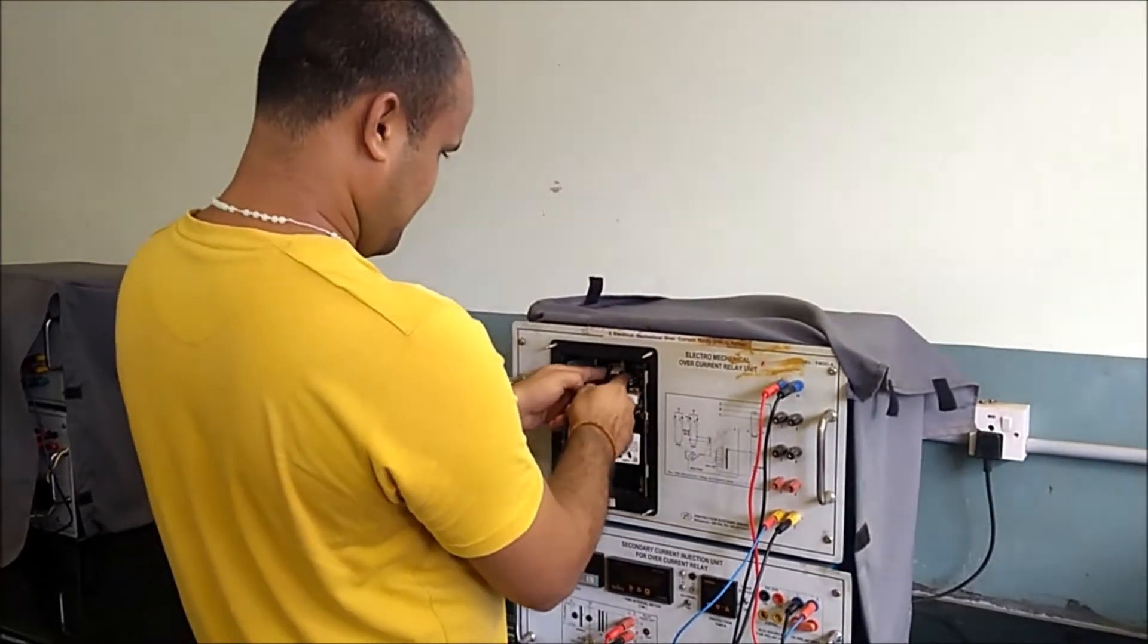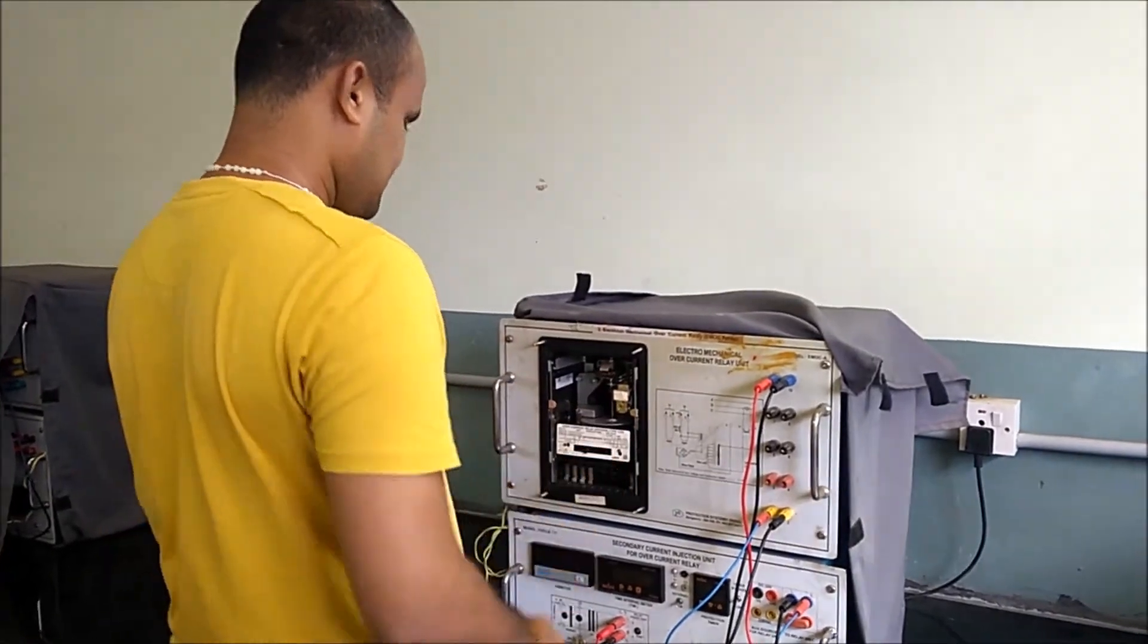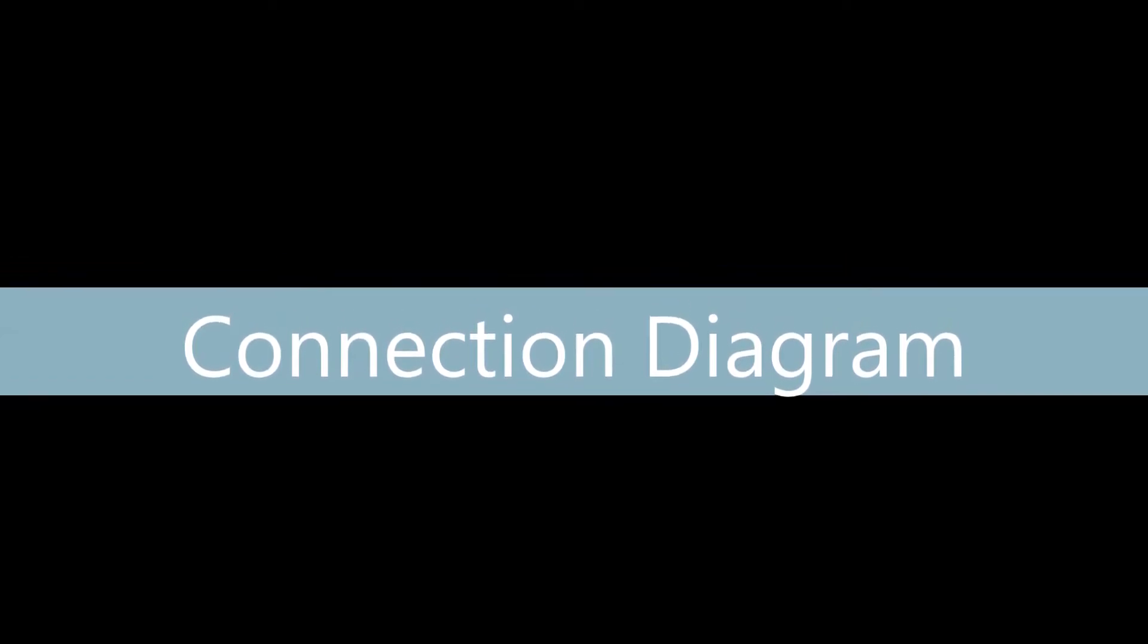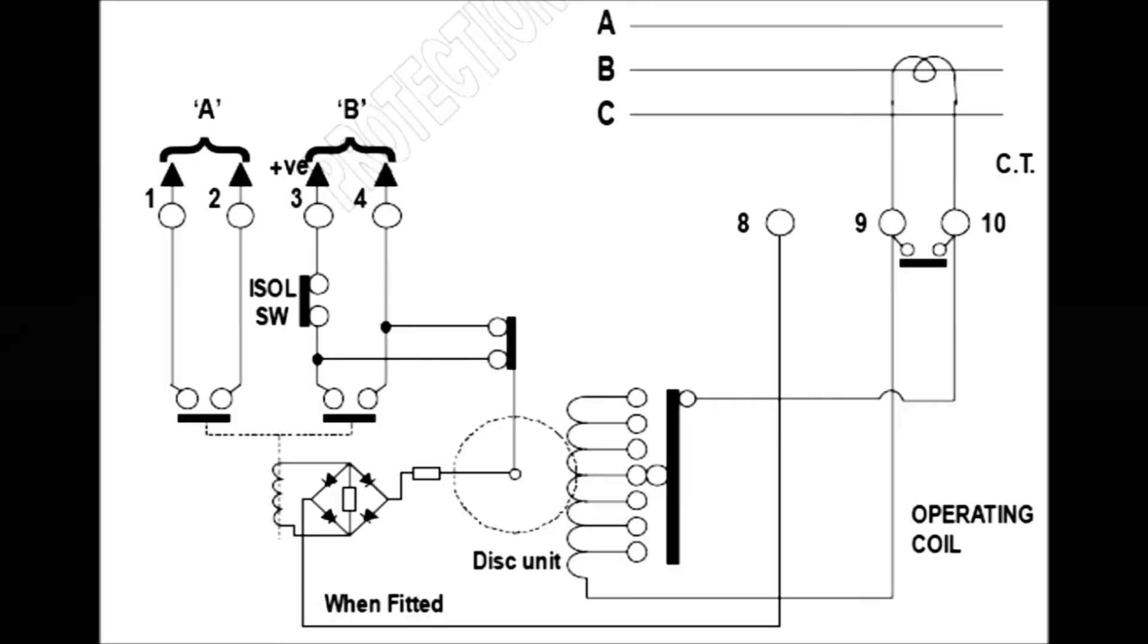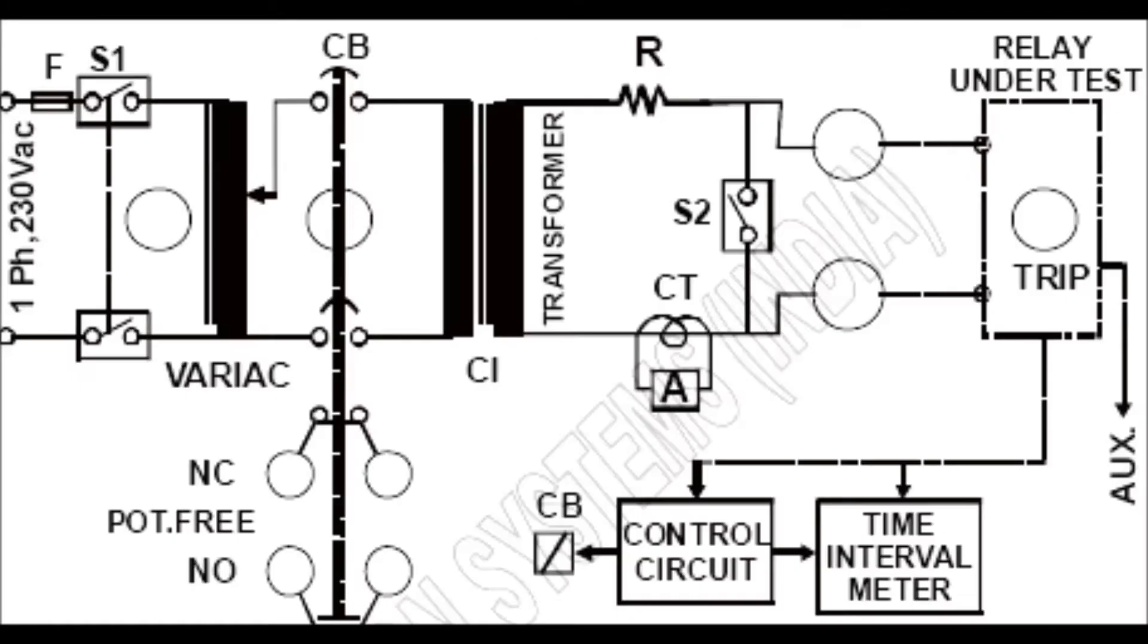We have to study on that, let us have a look at the connection diagram for this particular relay. Here from the three phase, one of the phases is taken as a current transformer - via current transformer it is given to the magnetic disc of the relay, and the disc rotates proportionately to the direction of the current.